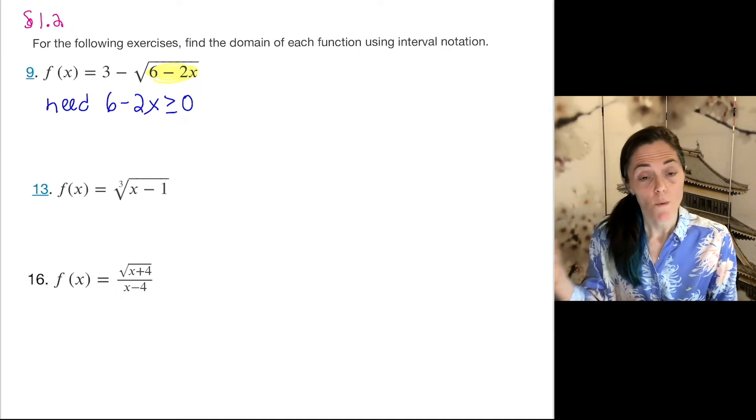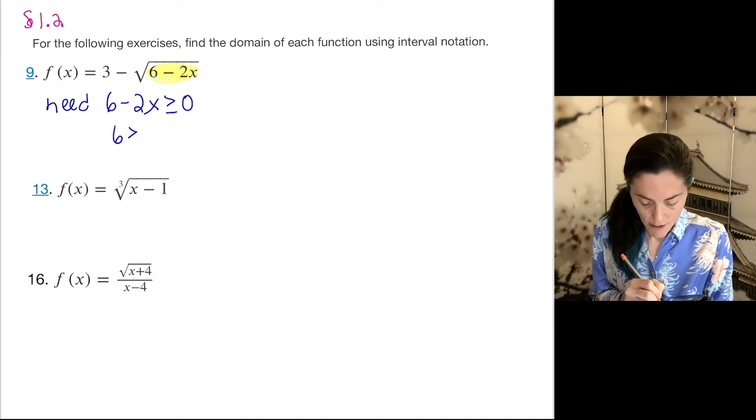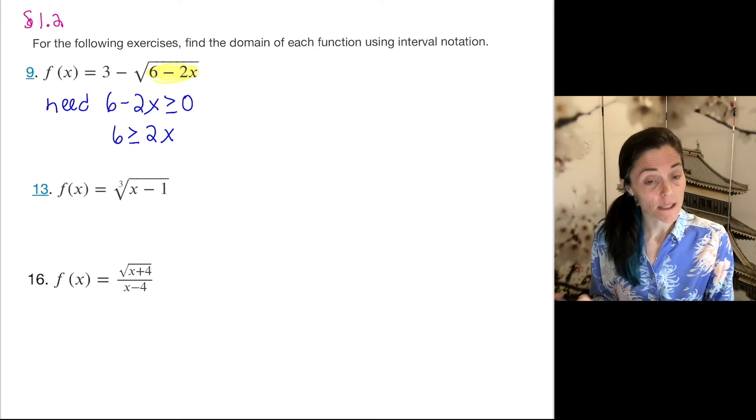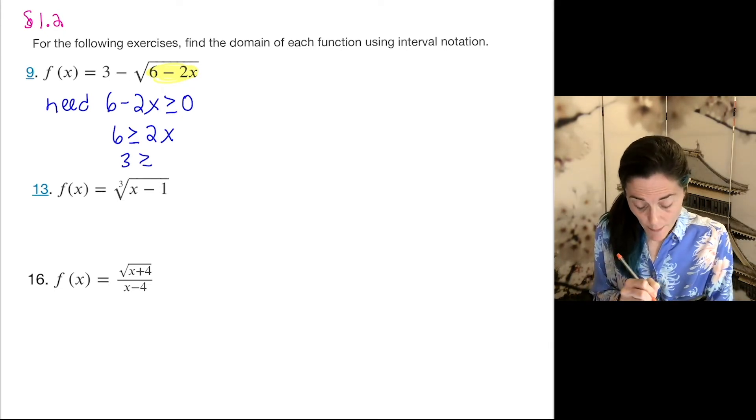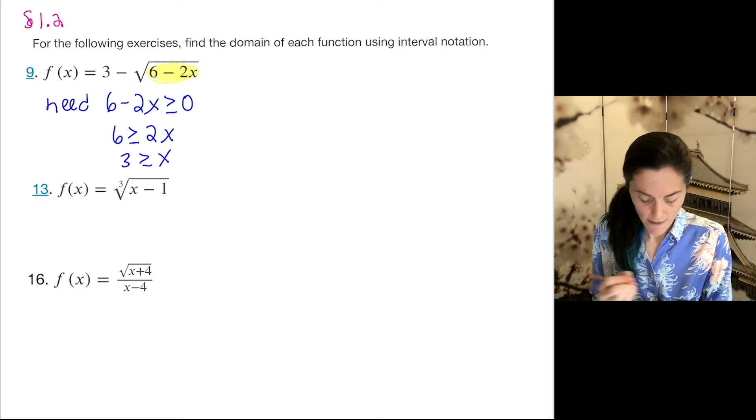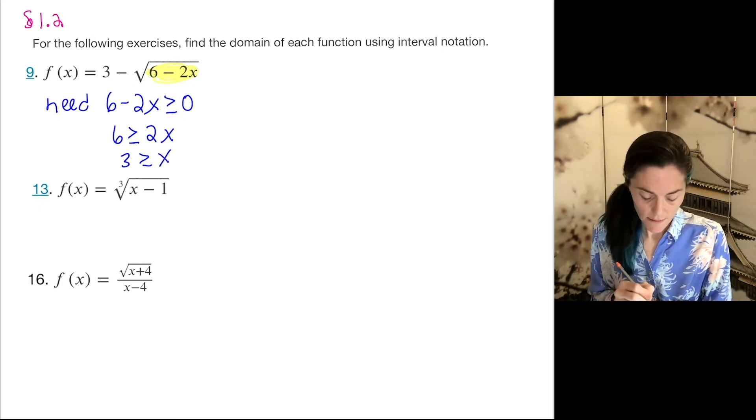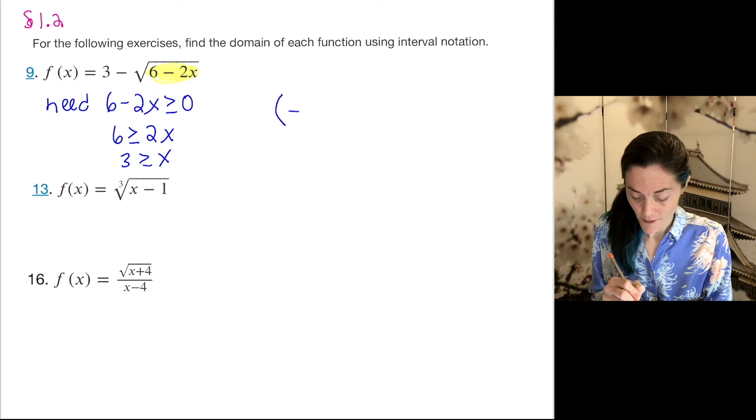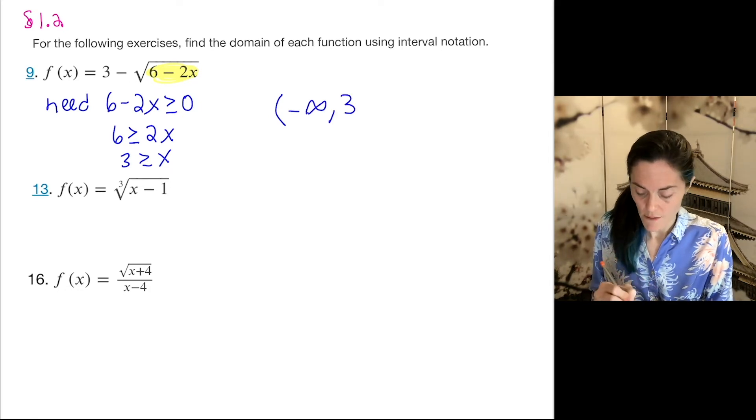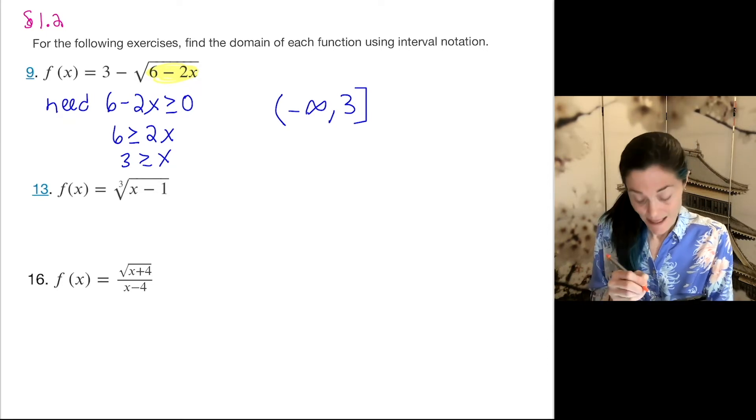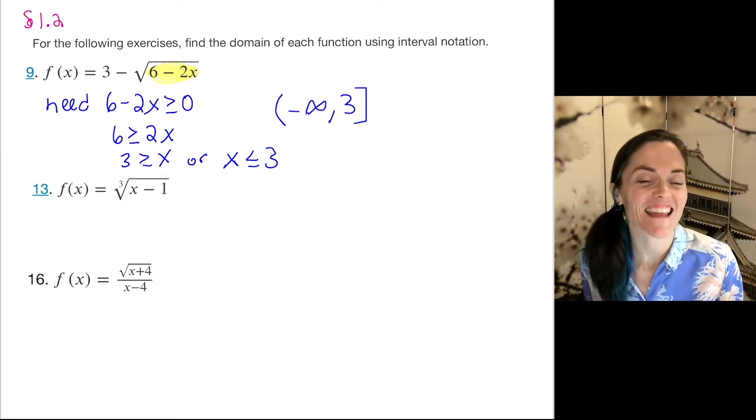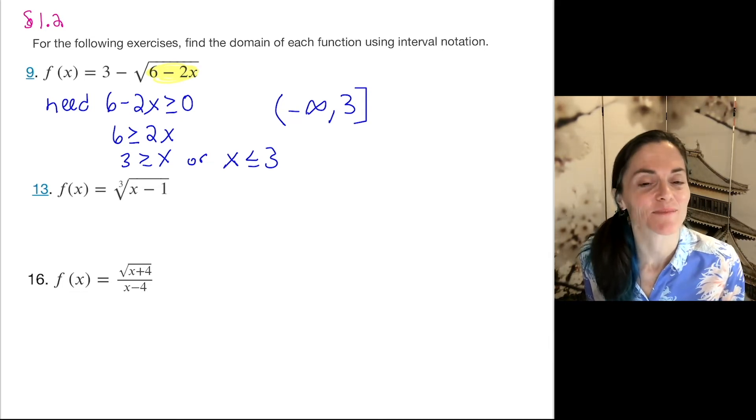The first problem, you notice we see a square root here. So what we need is what's underneath the square root to be greater than or equal to 0. Well, I could just add 2x to both sides. I get that 2x must be less than or equal to 6. And now I can just divide by 2. If you divide by a positive number, it doesn't change the way the inequality goes. So this says x is less than or equal to 3. Let's write this in interval notation. We go from minus infinity up to 3, and this is closed. And if it helps you, you can write it the other way, x less than or equal to 3. Sometimes it's easier to see with the x here rather than on this side of the inequality.